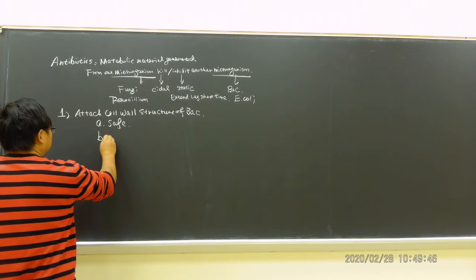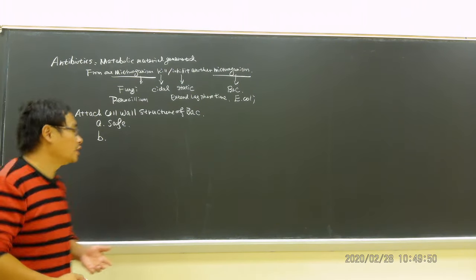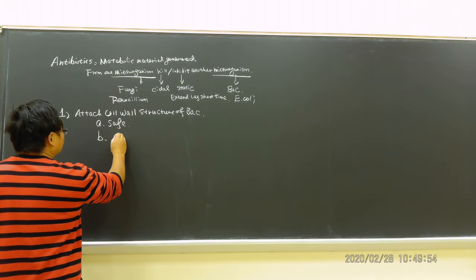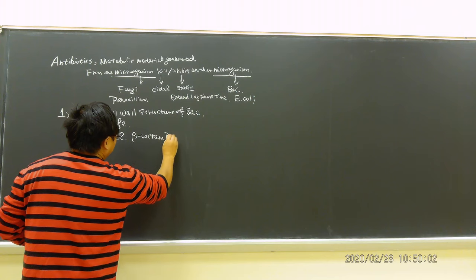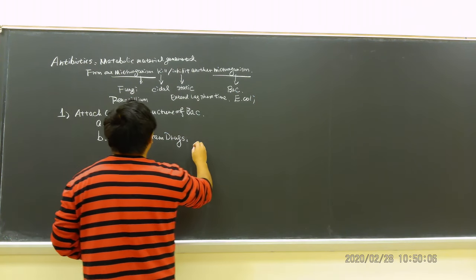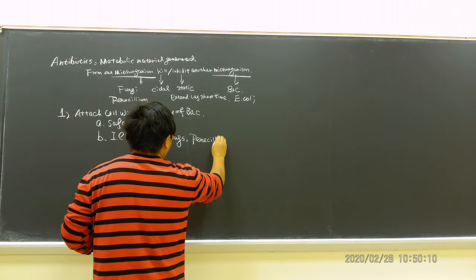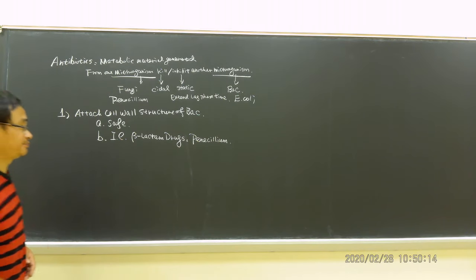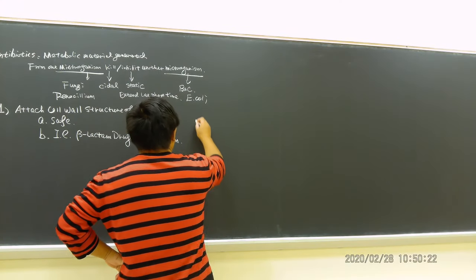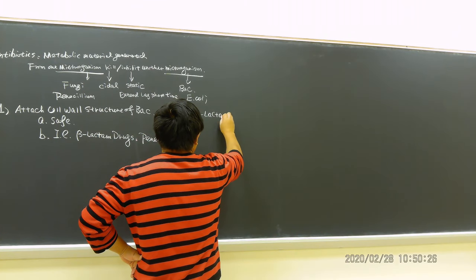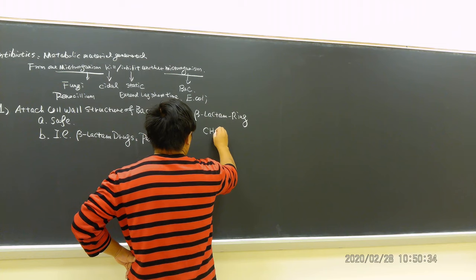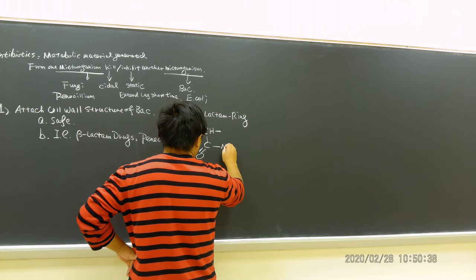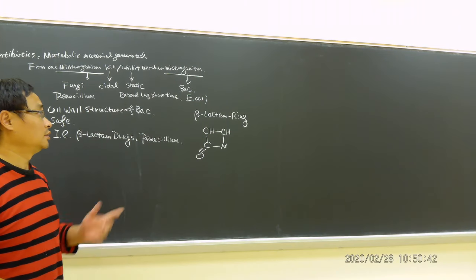Number two, this has been studied a lot by scientists in history. A good example is beta-lactam drugs, and a good example is penicillin. So what's the story? This is a beta-lactam ring for all of these penicillins, which looks like that.